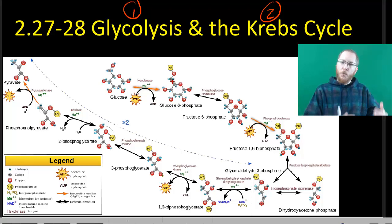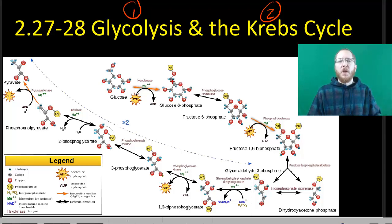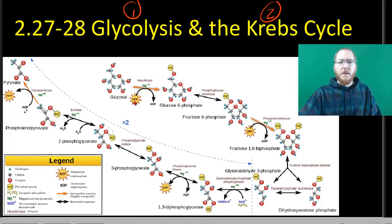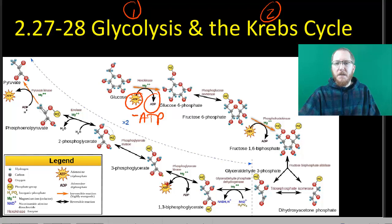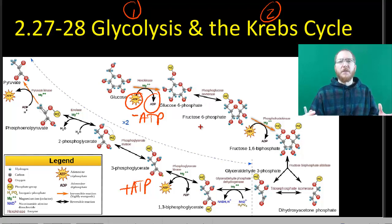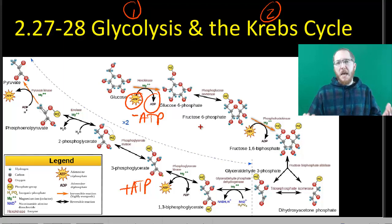We're going to focus on where it happens, what comes in, and what we get out of it. But if I give you a chart like this, I also want you to be able to interpret it. If you see ATP being converted to ADP, that means it's being used — essentially minus ATP. If you see ADP becoming ATP, that's plus ATP. You should be capable of extracting that information from a chart.